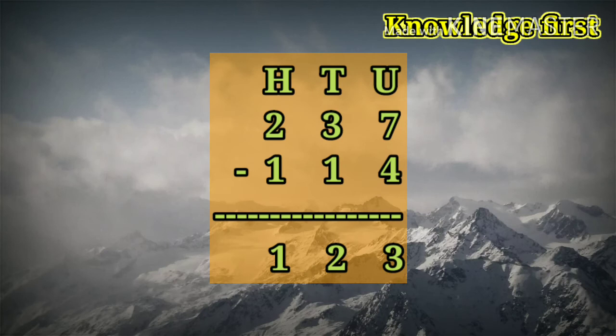See this example carefully. 237 minus 114. Start the subtraction from unit place. 7 minus 4 is equal to 3. Tens place, 3 minus 1 is equal to 2. And hundreds place, 2 minus 1 is equal to 1. Answer is 123.